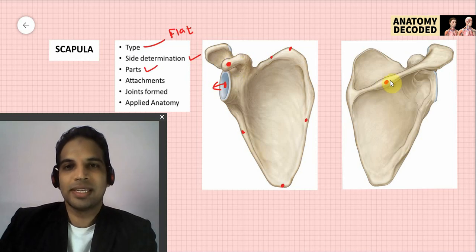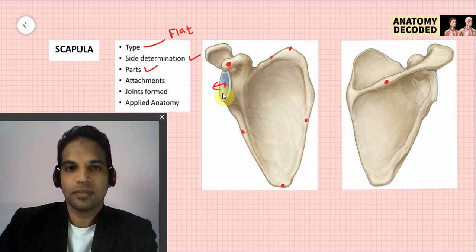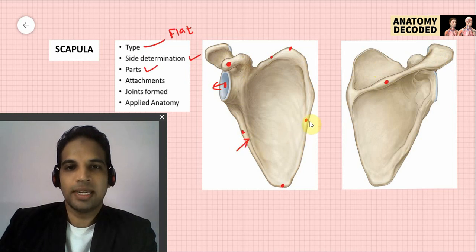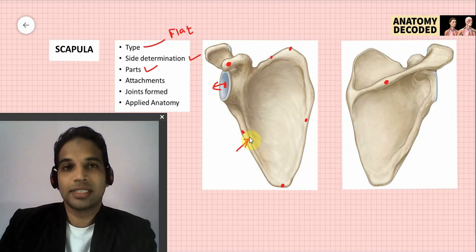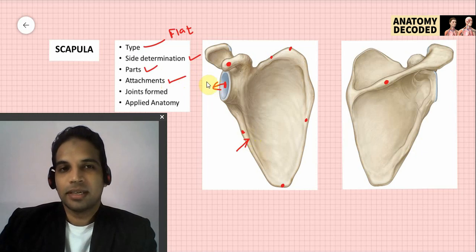Other parts of the scapula include the coracoid process, the spinous process (spine), and the acromion process. The lateral border of the scapula is thick compared to the medial border, which can also be used in side determination — the thick border should be on the lateral aspect.